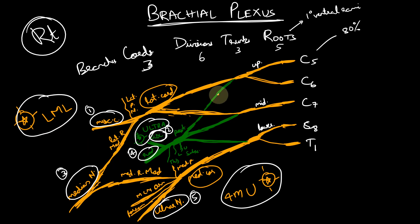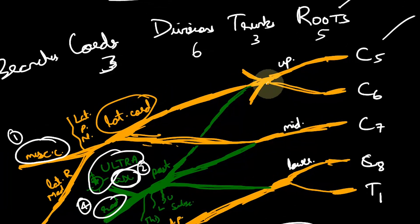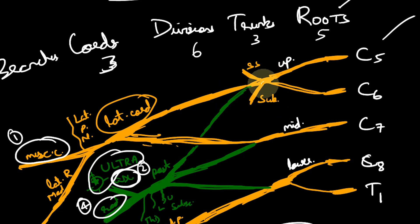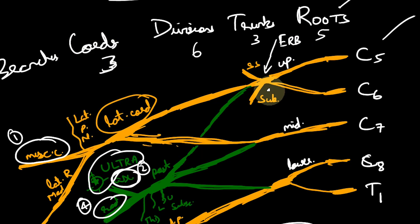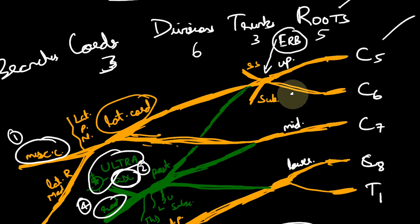From the upper trunk, there are two additional branches: the suprascapular nerve and the nerve to subclavius. The point where C5, C6, the suprascapular nerve, the nerve to subclavius, and the anterior and posterior divisions all converge is known as Erb's point — essentially the upper trunk. An injury to this region causes Erb's palsy. Note: there is another Erb's point learned in cardiac auscultation.